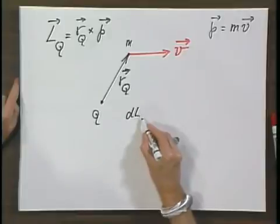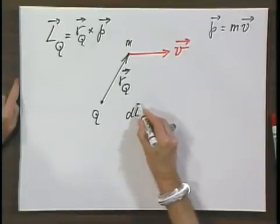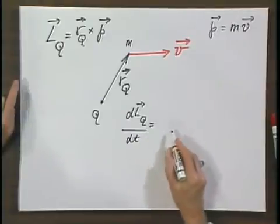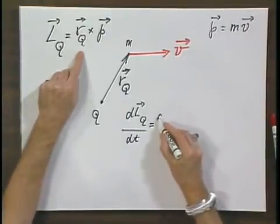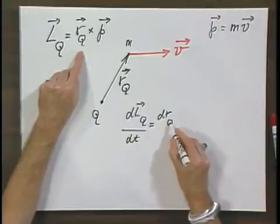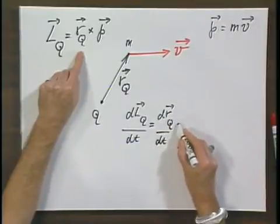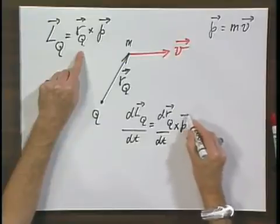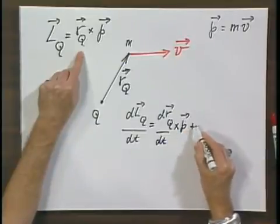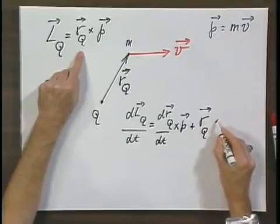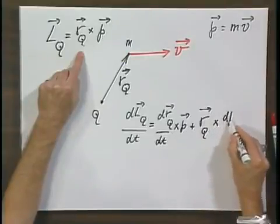Now, I take dL_Q/dt, which according to my chain rule equals dR_Q/dt crossed with P plus R_Q relative to Q cross times dP/dt.